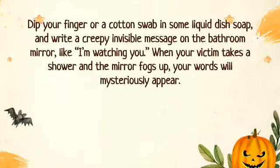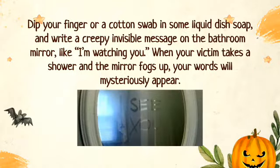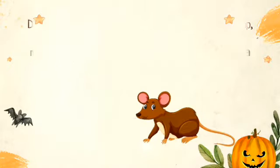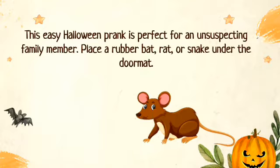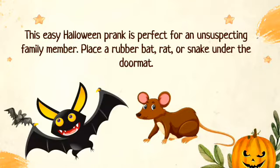Dip your finger or a cotton swab in some liquid dish soap and write a creepy invisible message on the bathroom mirror like 'I am watching you.' When your victim takes a shower and the mirror fogs up, your words will mysteriously appear. This easy Halloween prank is perfect for an unsuspecting family member. Place a rubber bat, rat or snake under the door mat.